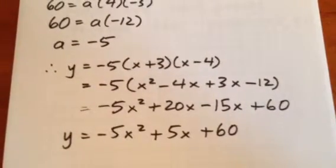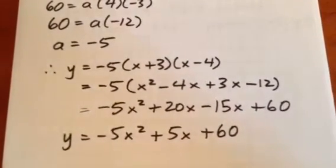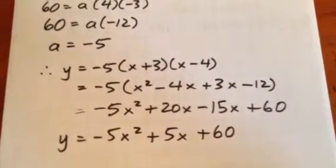That is a parabola with roots at negative 3 and positive 4 that goes through the point (1, 60).